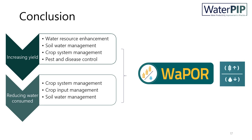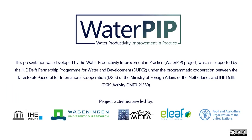To conclude, water productivity improvements can be achieved through improving yield on the one hand or reducing non-beneficial water consumption on the other. Improving yield through providing more water does not necessarily improve water productivity, but in combination with other interventions can provide incremental benefits, as long as the rate of increasing yield is higher than the rate of increase in water consumption. It also illustrates that although improving water productivity makes the use of water more efficient, it does not mean the total water consumed is reduced. Thank you for listening.